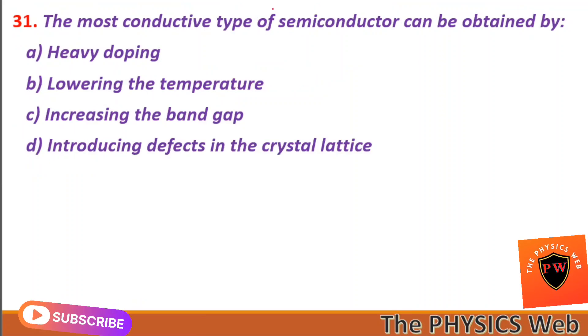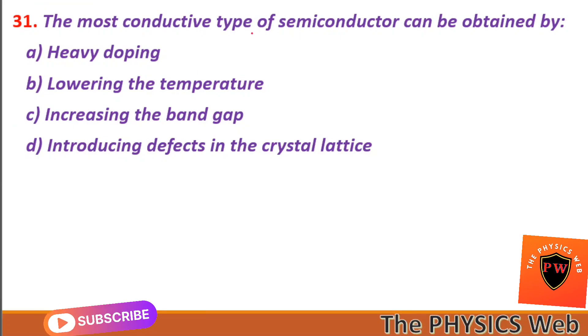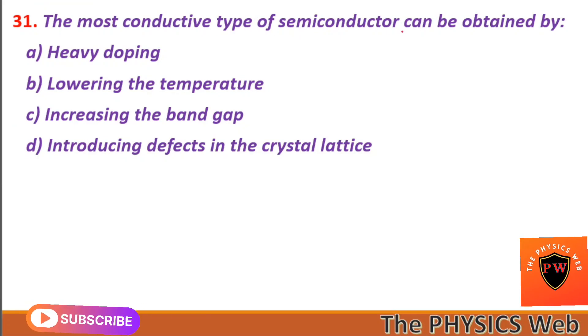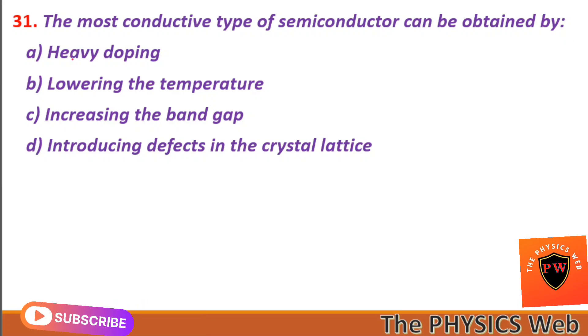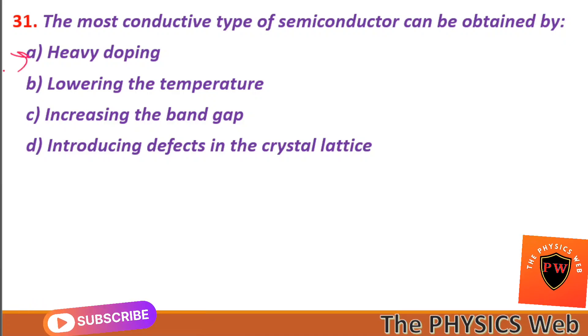Next, question thirty-one: the most conductive type of semiconductor can be obtained by heavy doping. So A is your correct option.